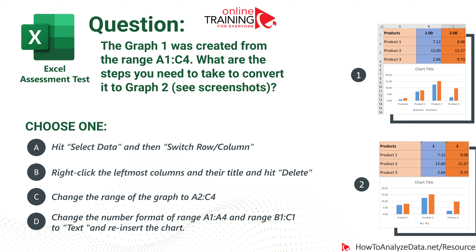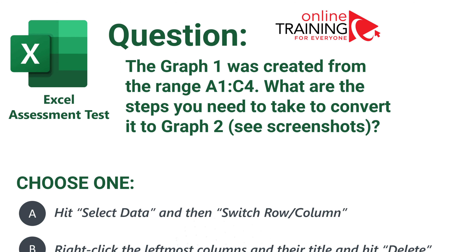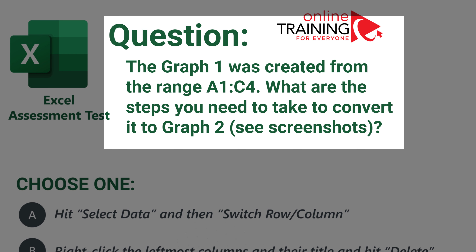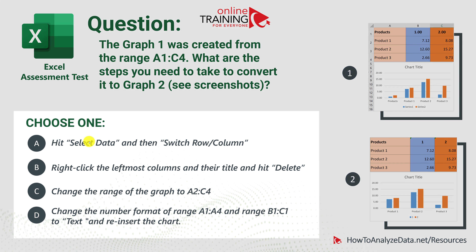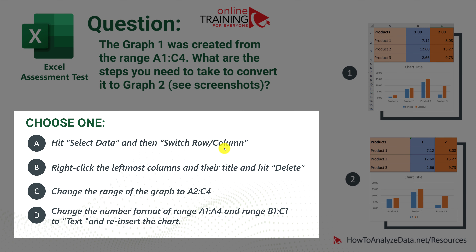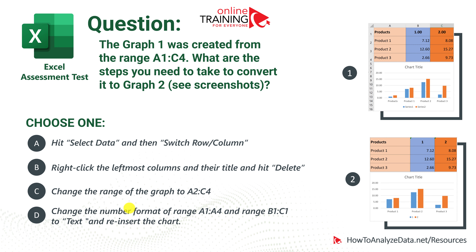Now let's look at a question testing your knowledge of Microsoft Excel charts and graphs. Graph 1 was created from range A1 through C4. What steps do you need to take to convert it to Graph 2? You are presented with two screenshots. The four choices are: A) hit Select Data then switch row and column; B) right-click the leftmost column title and hit delete; C) change the range to A2 through C4; D) change the number format of ranges A1:A4 and B1:C1 to text and reinsert the chart.